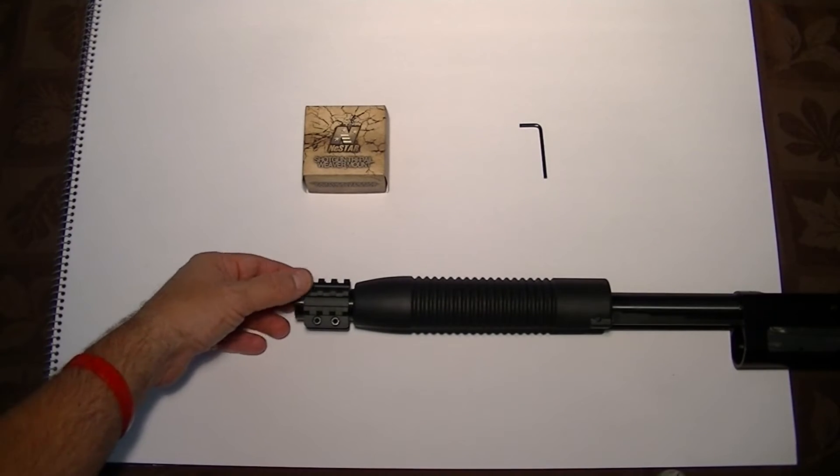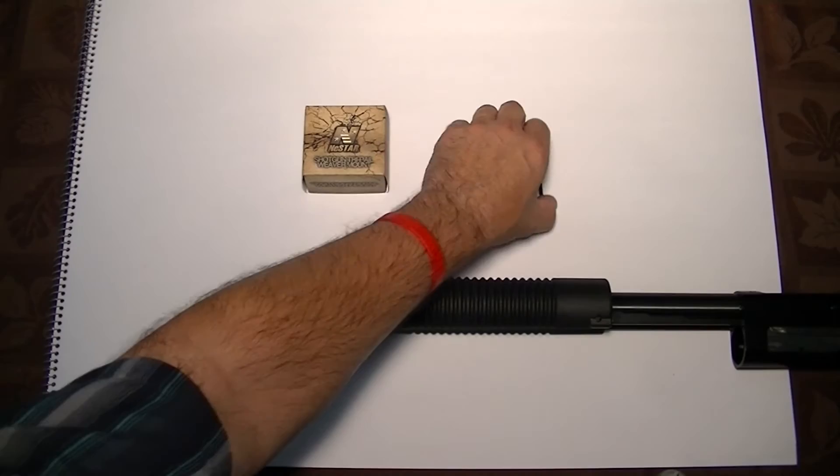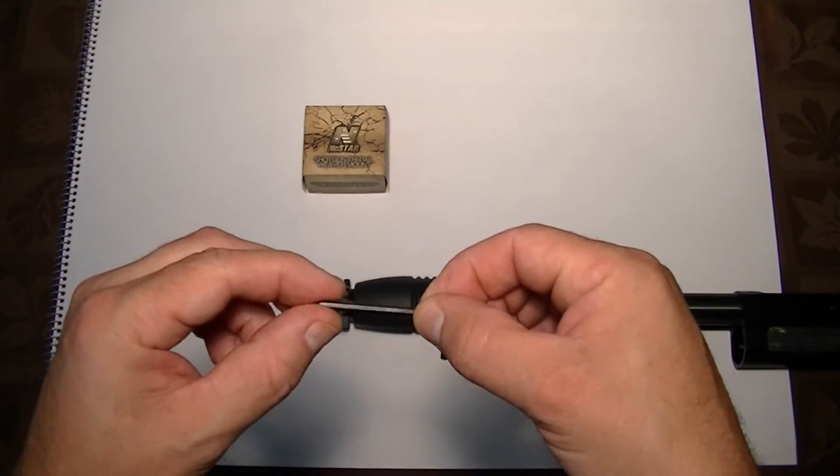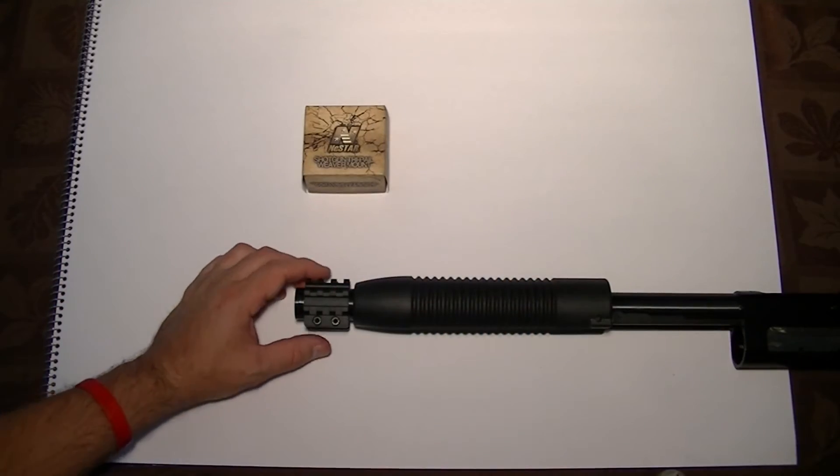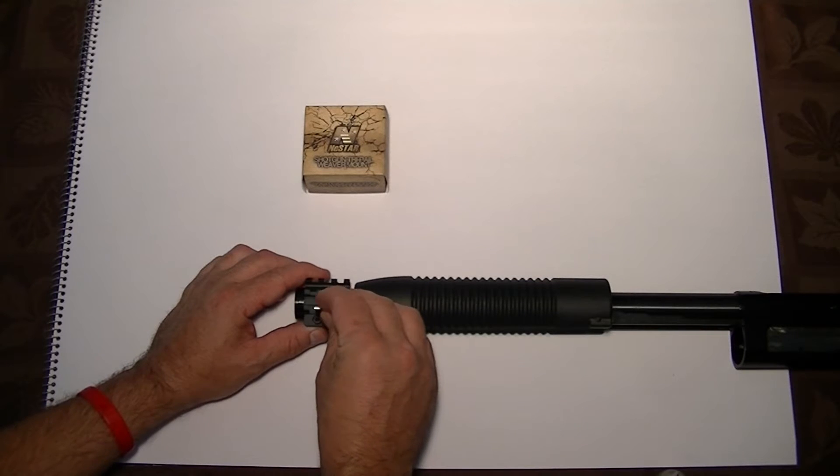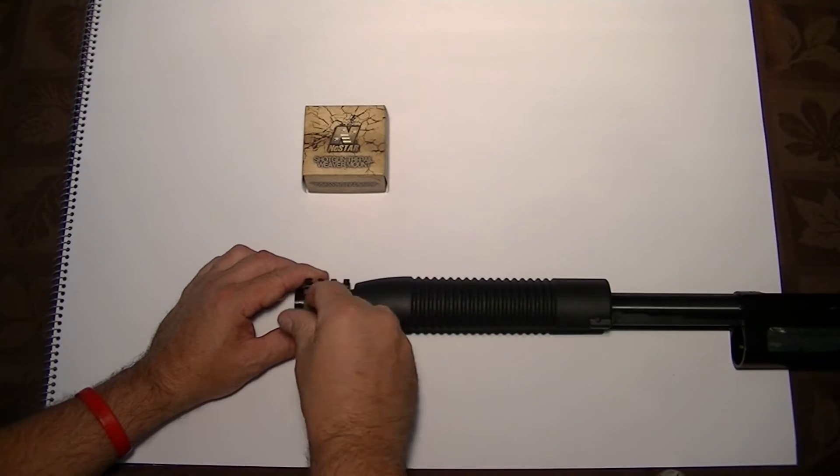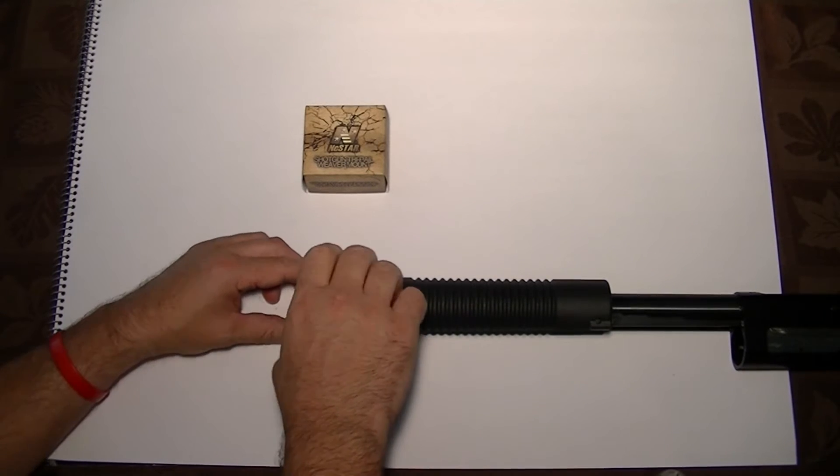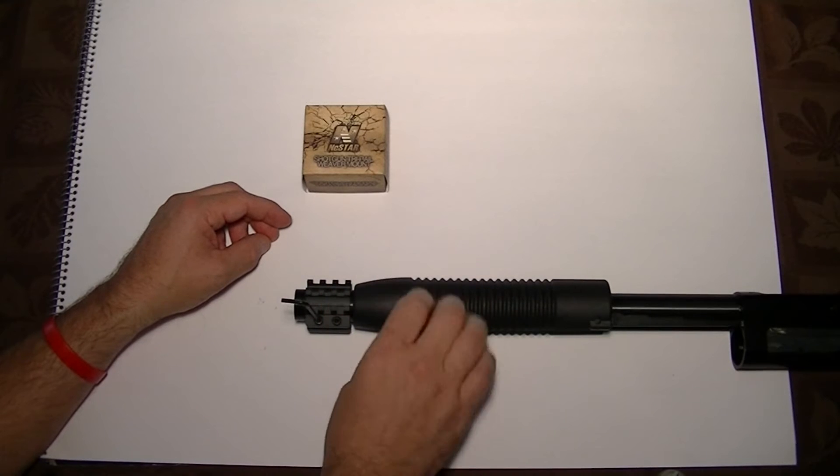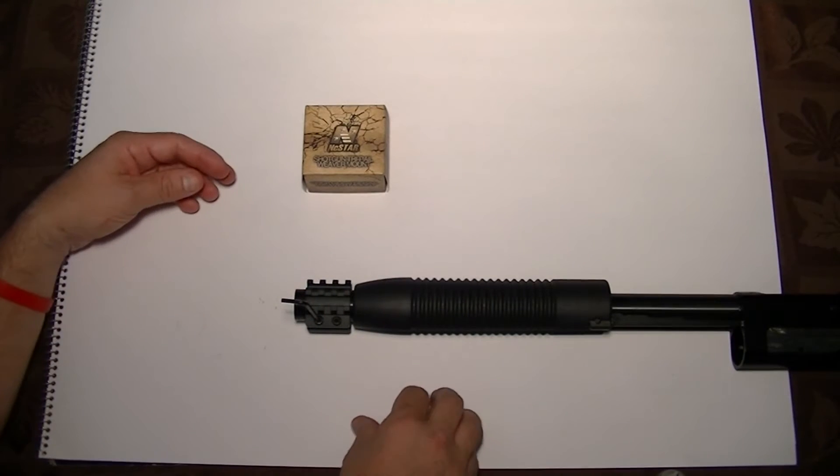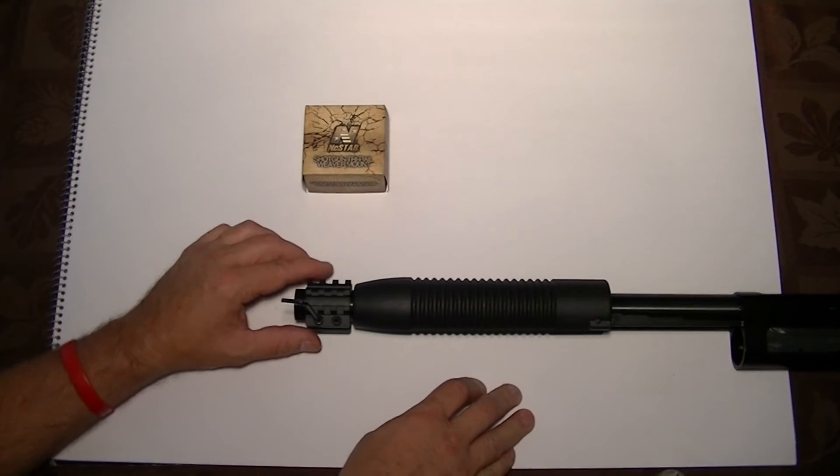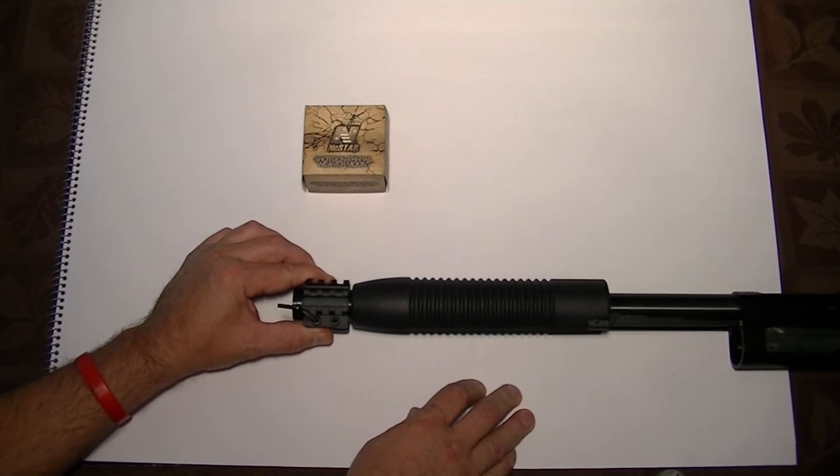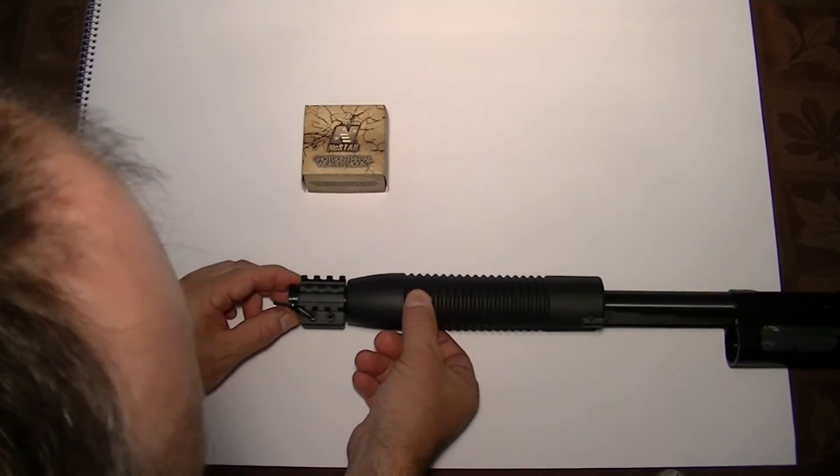Next step is slide the tri-rail on. The NC Star comes with an Allen key to put this on, an Allen wrench. Put that on, pretty basic. There's a line, straight, looks fairly straight to me.